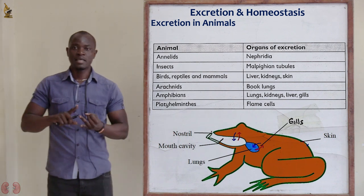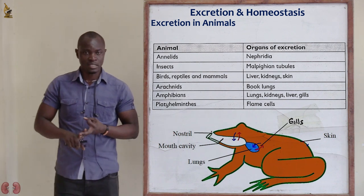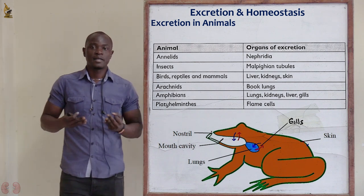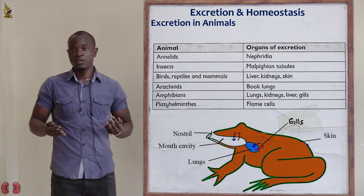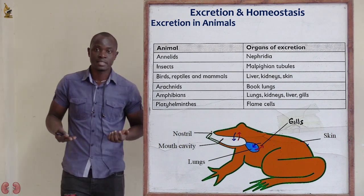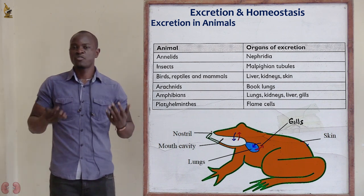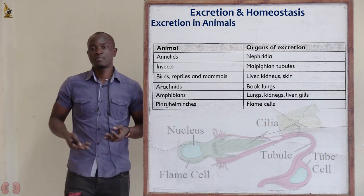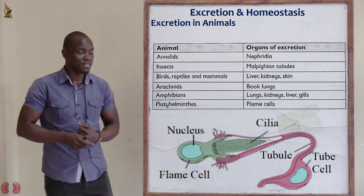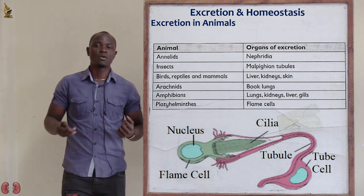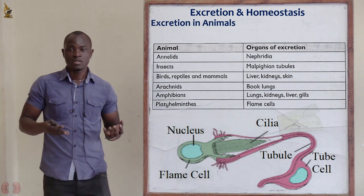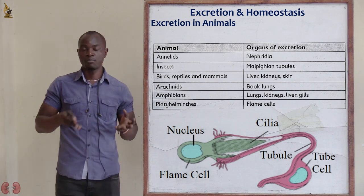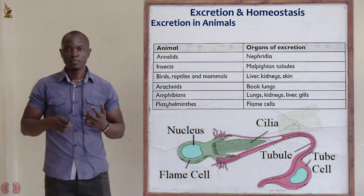Amphibians — which include frogs, salamanders, and toads — use the kidneys, lungs, liver, and gills to remove different waste products from their bodies. Additionally, Platyhelminthes, which mainly comprise tapeworms, use flame cells in order to remove waste products from their bodies.